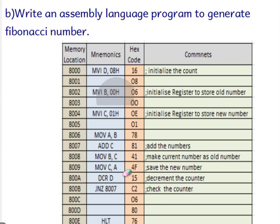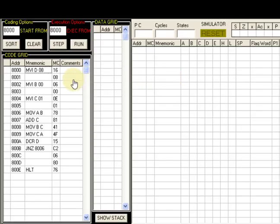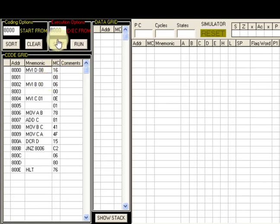As soon as D becomes zero we exit the loop, and the number in register A is the tenth Fibonacci number. We only generate the tenth Fibonacci number. Now let us execute this program on the simulator.